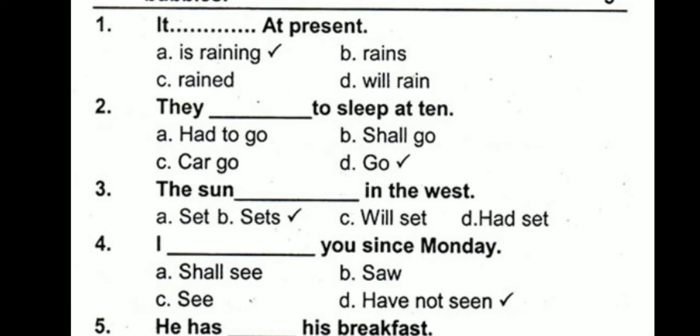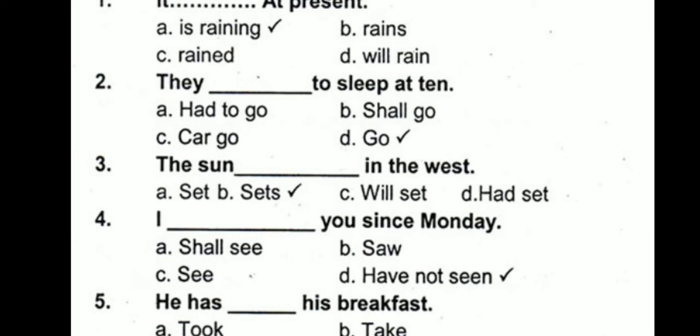Number two: 'They dash to sleep at 10.' This is a present indefinite tense. In present indefinite tense we use the first form of the verb, so 'they go to sleep at 10.' 'They' is not a singular third person, so S or ES will not be added. In present indefinite, S or ES is added only if the subject is a singular third person.